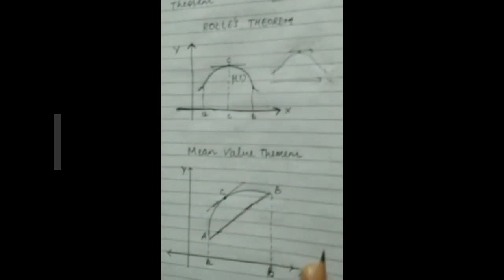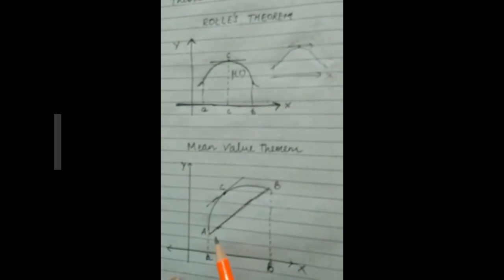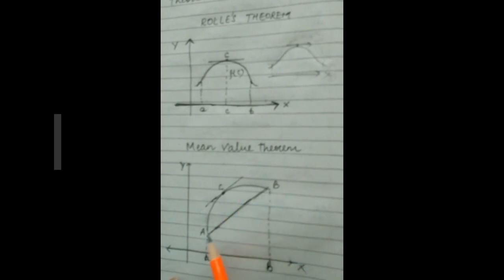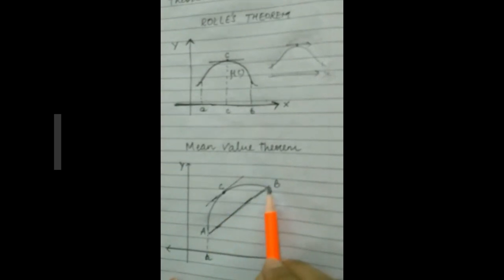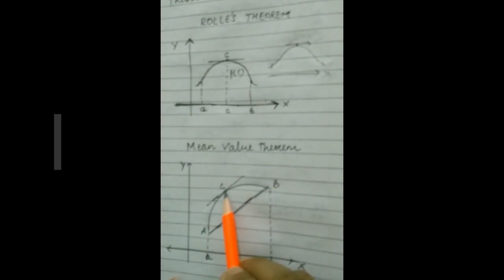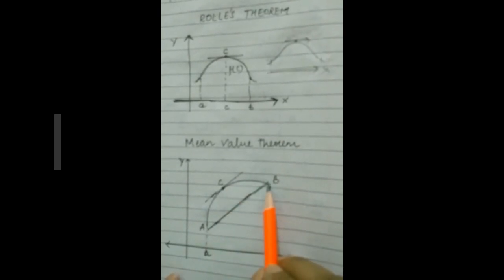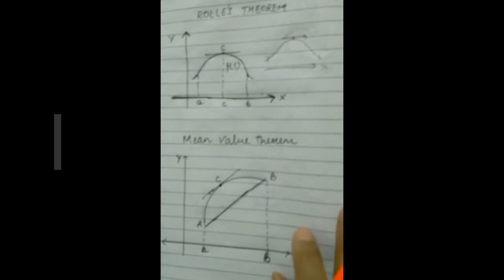The Mean Value Theorem says that if there is a curve which is continuous in the interval [a, b], then there exists at least one point c on the curve at which the tangent is parallel to the secant AB. Now we will do the conditions and statement of Rolle's Theorem and Lagrange's Theorem.